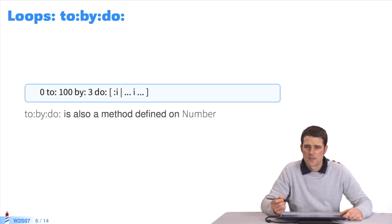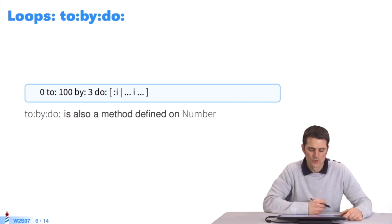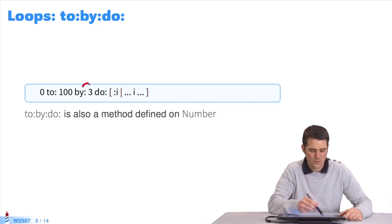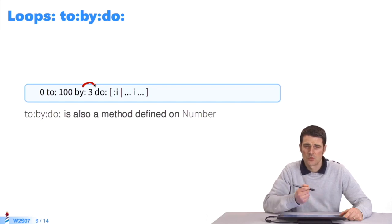There are other messages to create loops. For instance, the message to, by, do to increment by more than 1. You control the scale of the increment. You can increment by 3 in this example. With every loop, i takes values by step of 3.